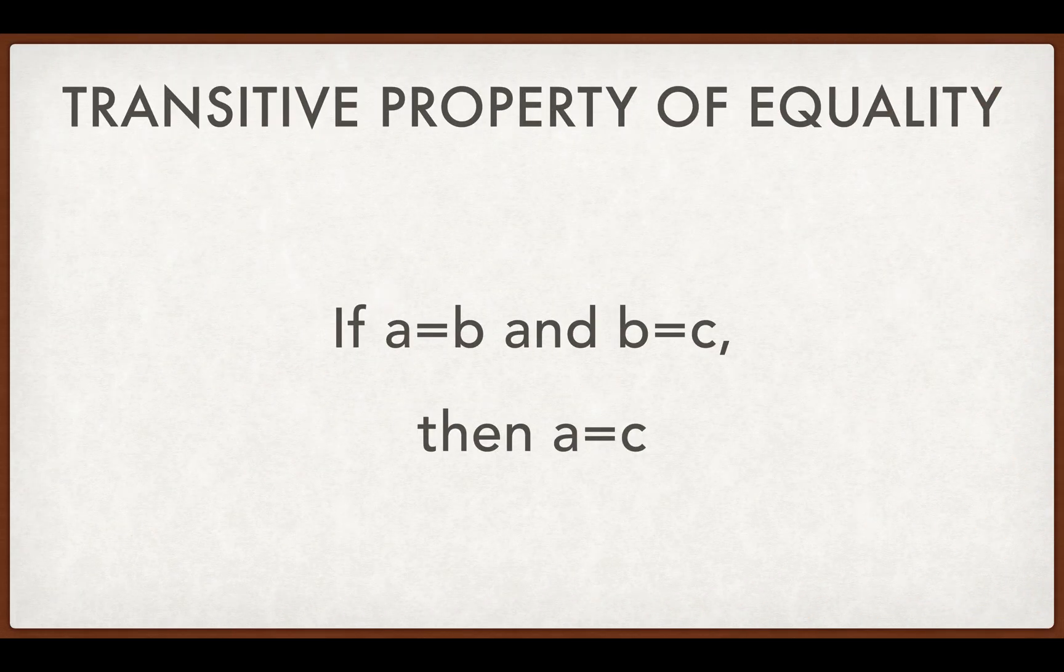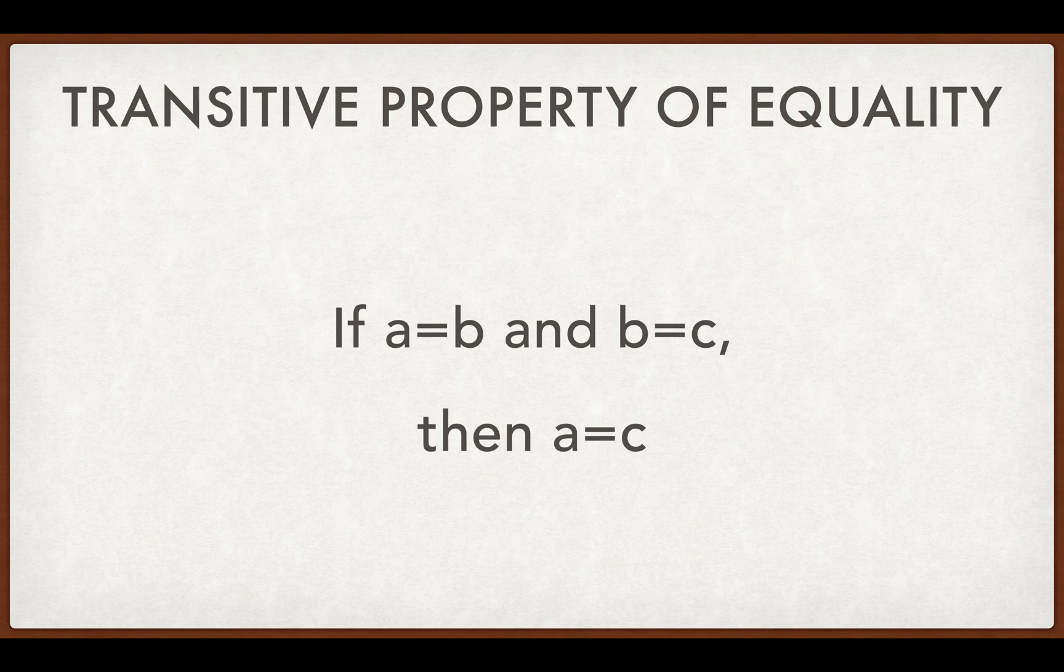Next, the transitive property of equality. If A equals B and B equals C, then A equals C. We don't need that middle man. Since they're both equal to B, they have to be equal to each other.